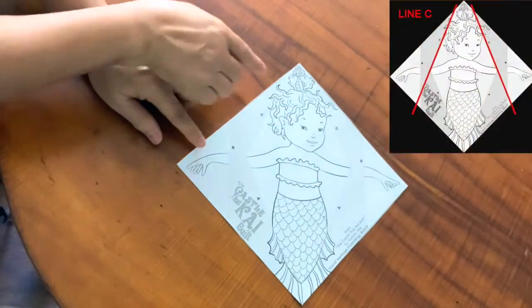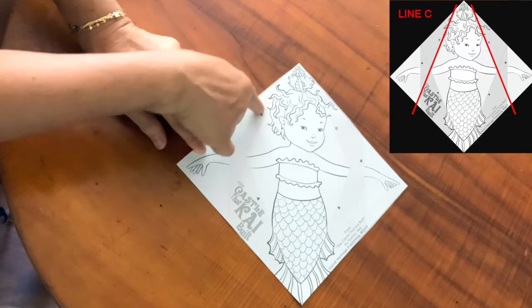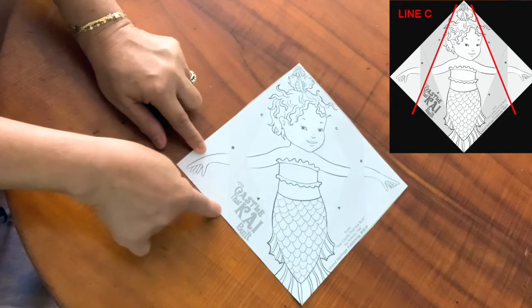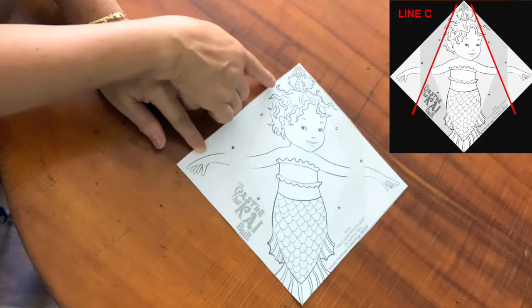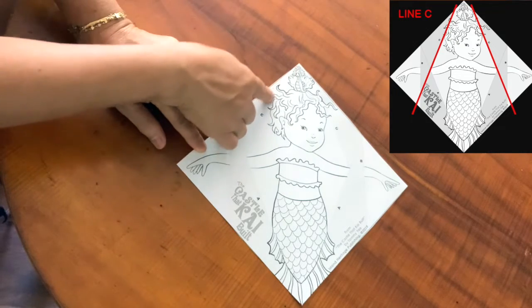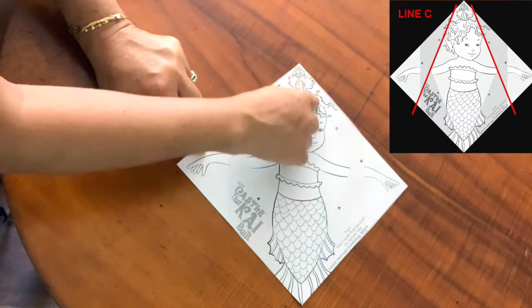Line C goes alongside her head and crosses her arm. Note that line C does not go to the point. It just goes alongside her head and it repeats on the other side.